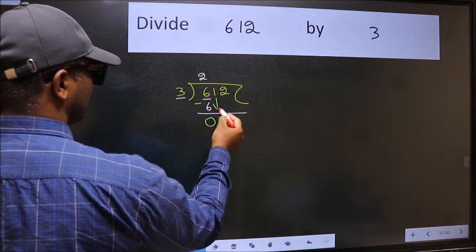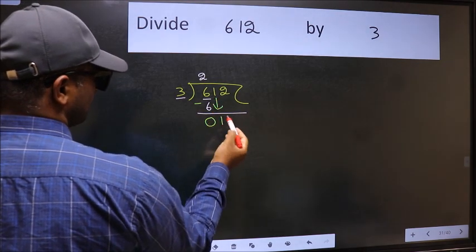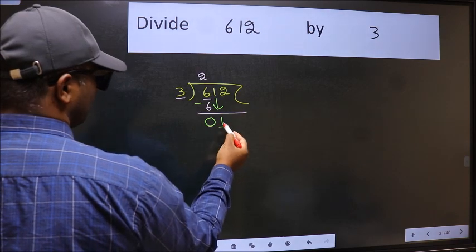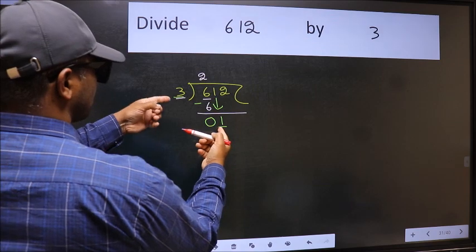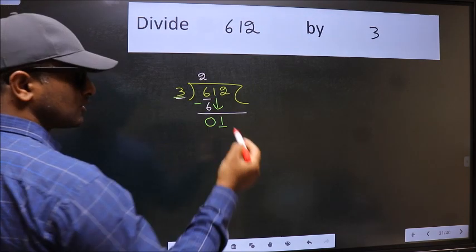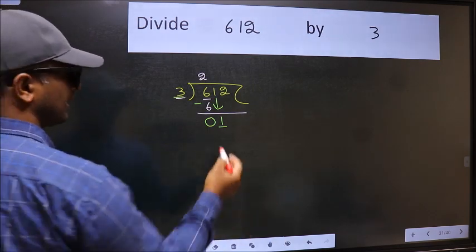After this, bring down the beside number. So 1 down. Now here we have 1 and here 3. 1 is smaller than 3. So we should bring down the second number.